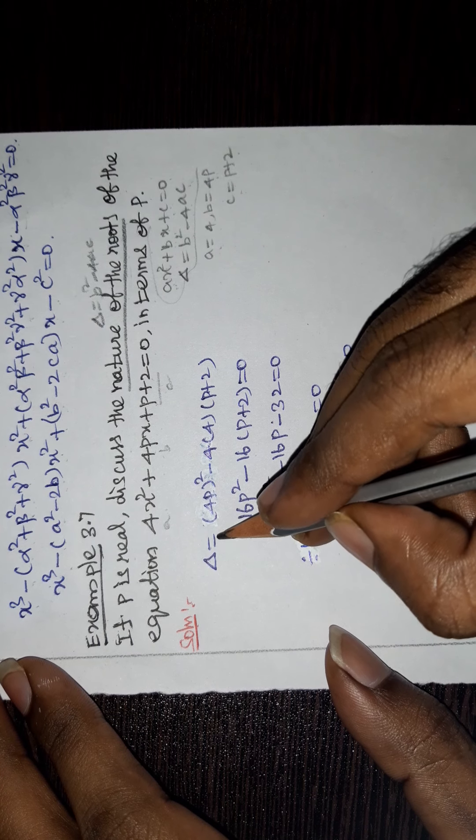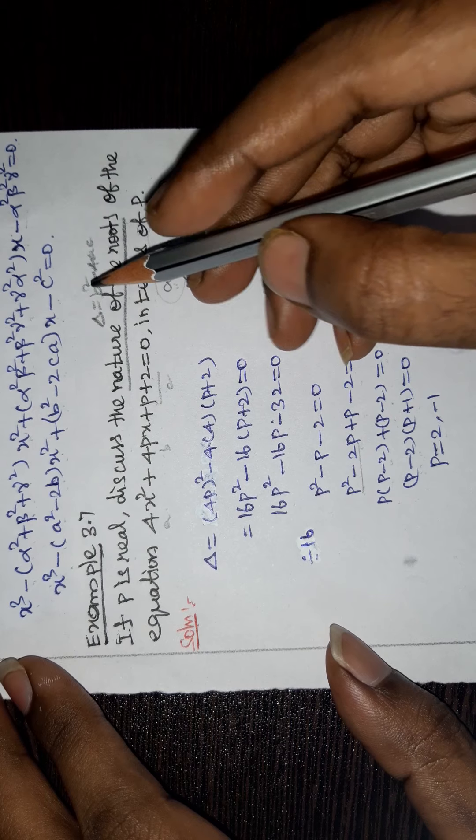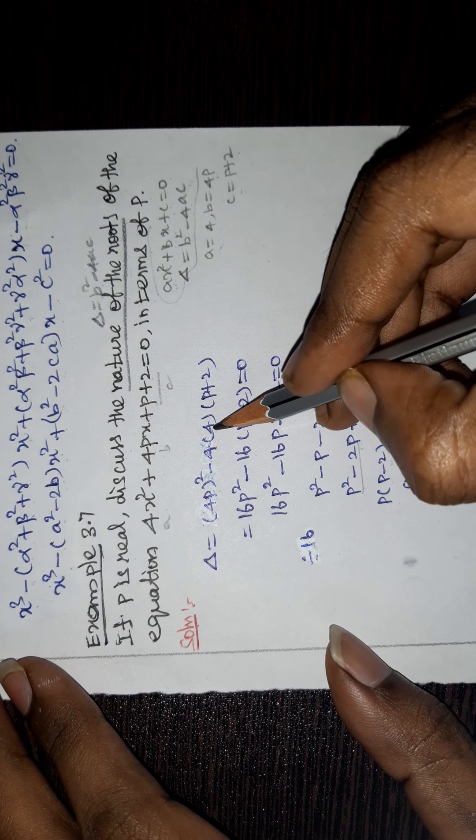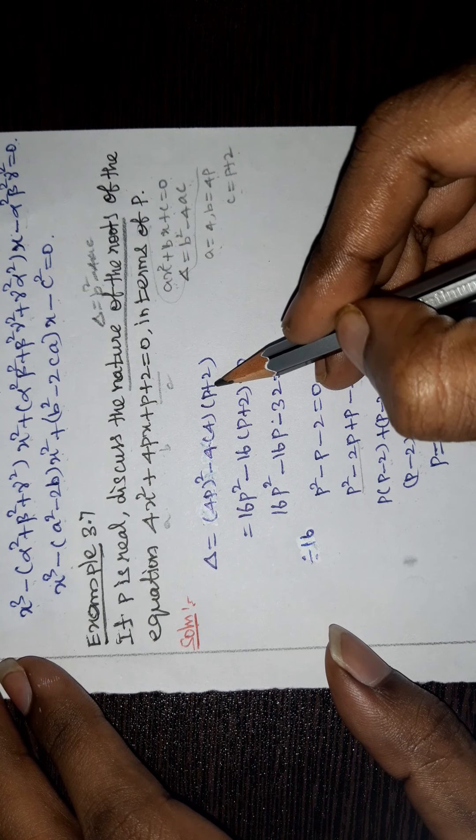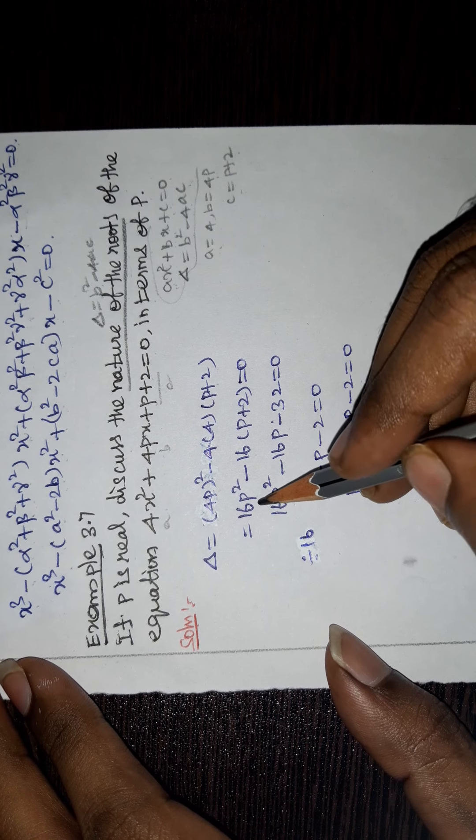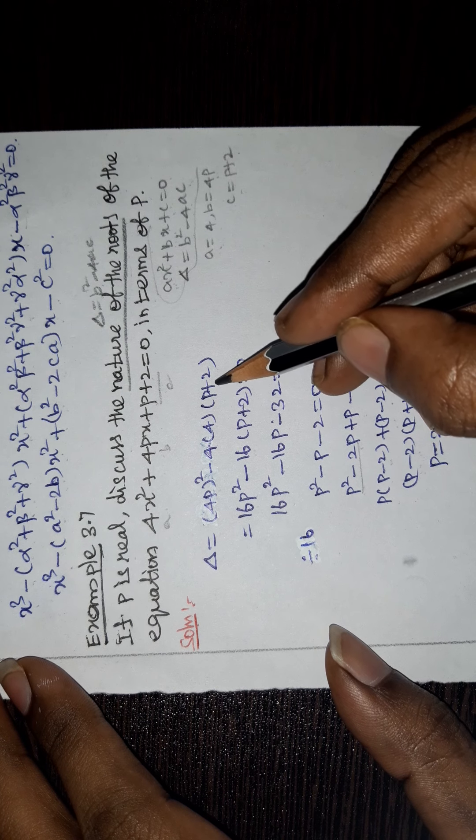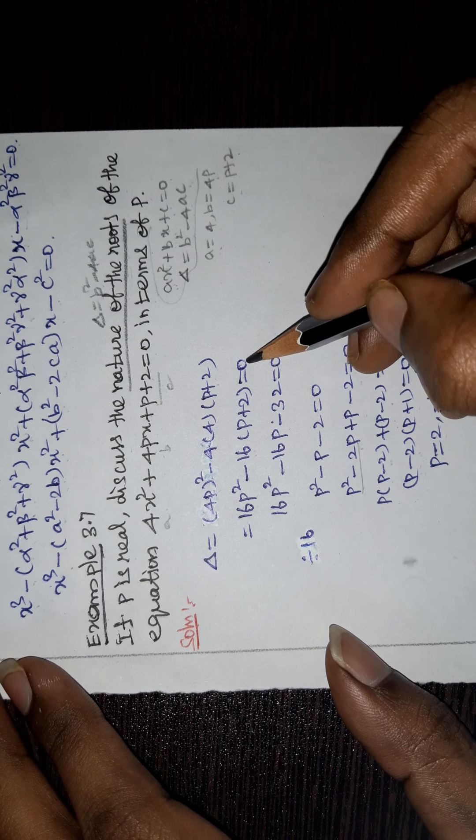We substitute here. Delta equals b² minus 4ac. b² means (4p)² minus 4 times a is 4, times c is p + 2. So 16p² minus 16 times (p + 2).